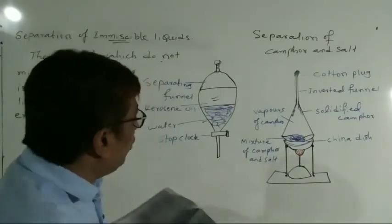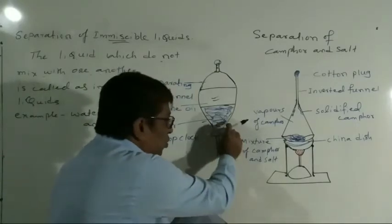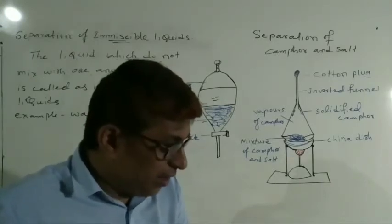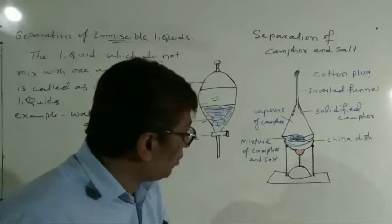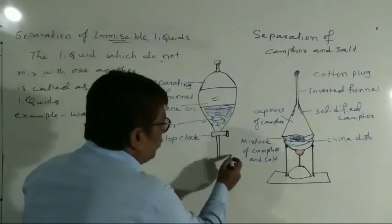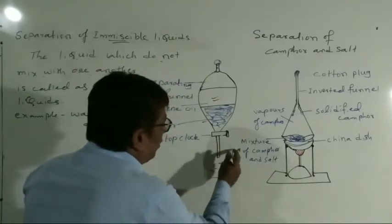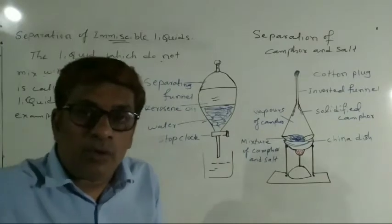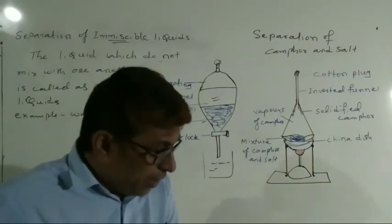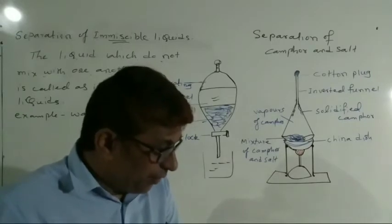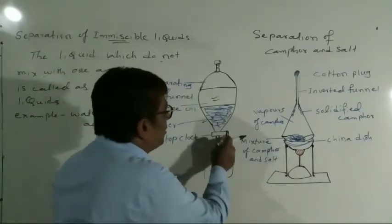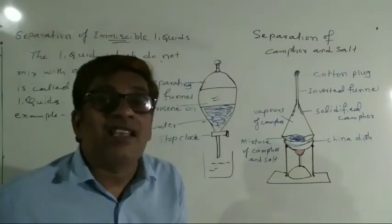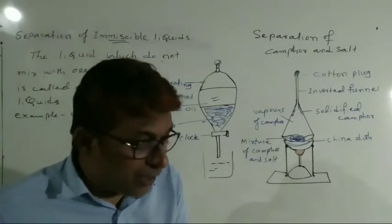Then what you have to do? Open the stopcock — this is the stopcock, just open it — from the separating funnel, and pour out the lower layer of water into a clean container. Collect the water which is at the lower layer, then close the stopcock when the oil reaches the stopcock. This is the way we can separate immiscible liquids.